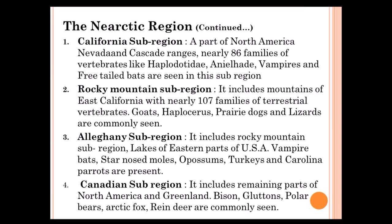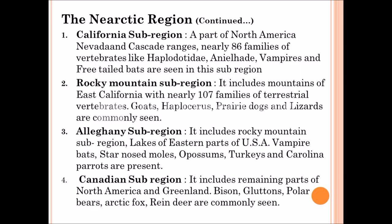First, the California sub-region. It comes under North America and Cascade ranges. It contains nearly 86 families of vertebrates like Aplodontidae, Vampire bats, Free-tailed bats, and so on. The second one is the Rocky Mountain sub-region. It includes mountains of East California and contains about 107 families of terrestrial vertebrates. Animals like goats, Antilocapra, dogs, and lizards are commonly seen.